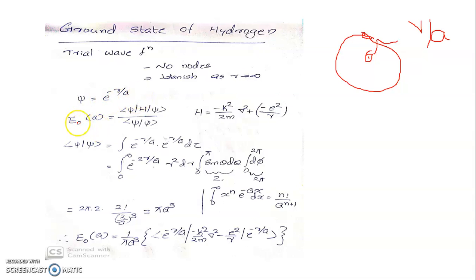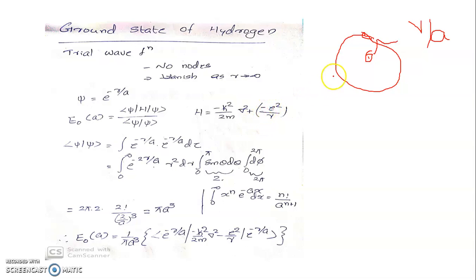Now we will evaluate the ground state energy using the Rayleigh-Ritz formula: E₀(a) equals the scalar product ⟨ψ|H|ψ⟩ divided by ⟨ψ|ψ⟩. Here H is the Hamiltonian, which is minus h-bar squared over 2m times del-squared, plus the potential energy of the hydrogen atom. In CGS units, the potential is minus e-squared divided by the separation r.